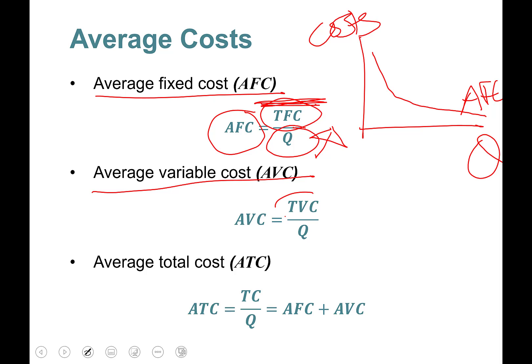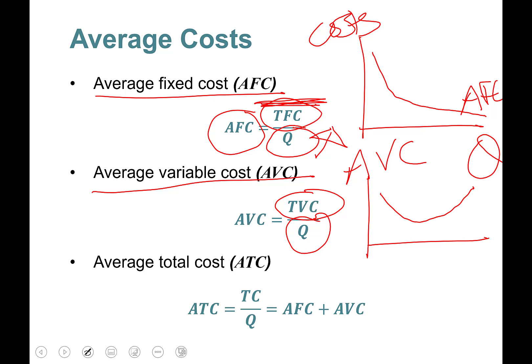Average variable cost is total variable cost divided by quantity. Average variable cost will first go down then go up — it has a U-shape, measured in dollars, with quantity on the x-axis.